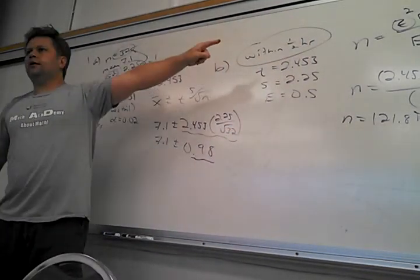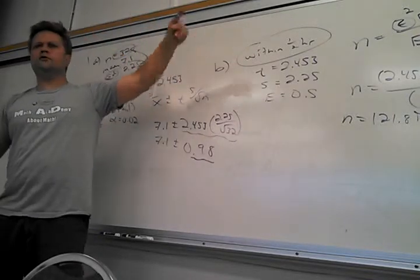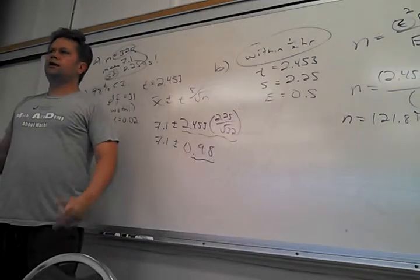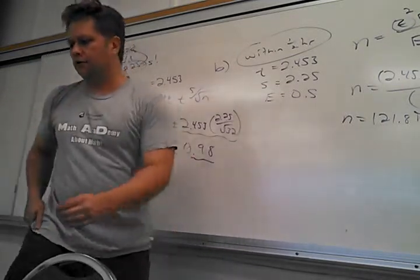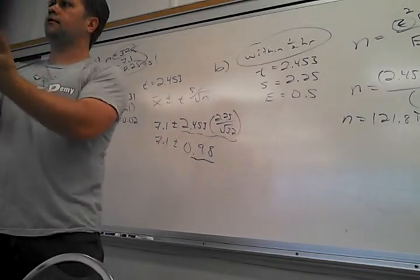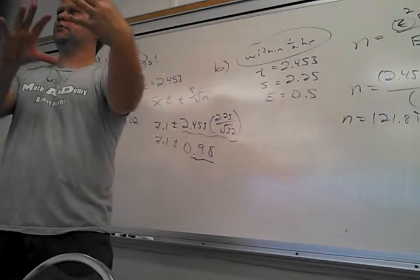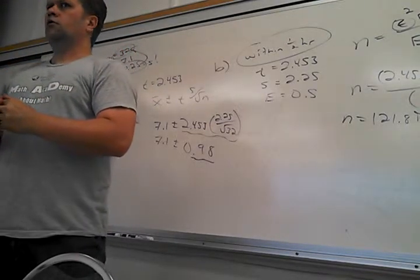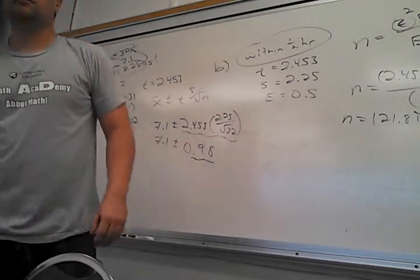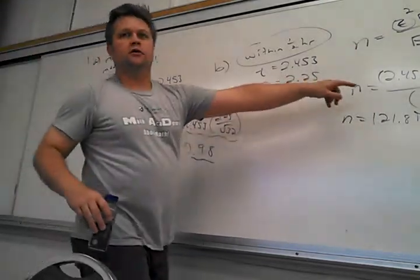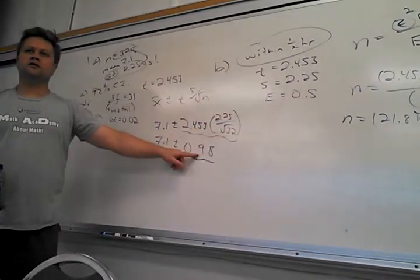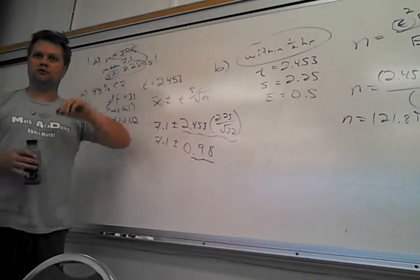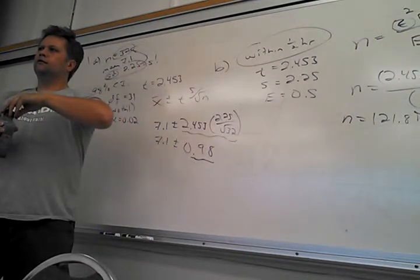How did I know you need 4 times? Because these are squared. If I want this to be half as much error, I square 2. If I want to be a third as much, I'd need 9 times as many people — 3 squared. Just because E is squared in the formula.